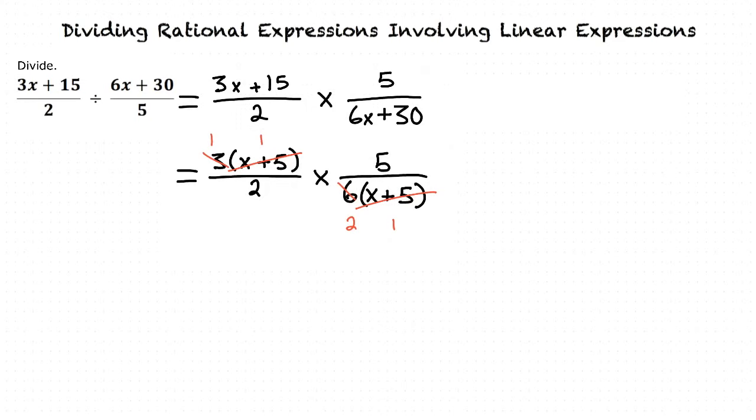After canceling out our common factors, we get 1 multiplied by 1 over 2 for the first fraction and 5 over 2 multiplied by 1 for the denominator of the second fraction, which results in 1/2 multiplied by 5/2.